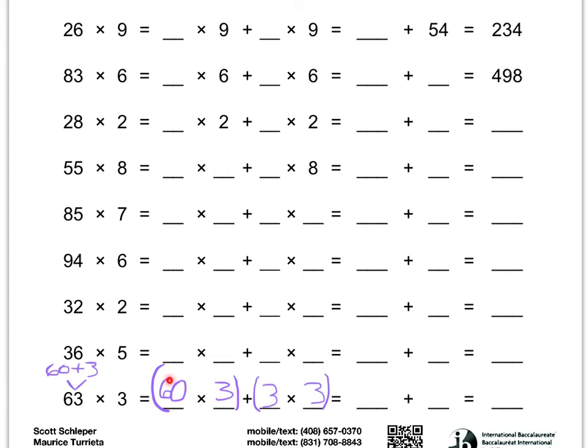Well, I know that 3 times 6 is 18, so if I tack that 0 on at the end, then it's 180. Okay, and then we have 3 times 3 is 9, so we put a 9 there. And if I add them together, 180 plus 9, I get 189.